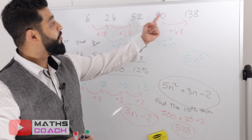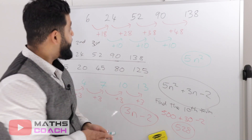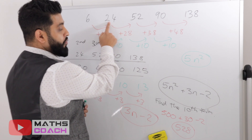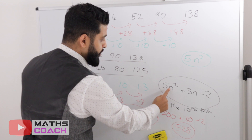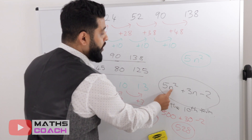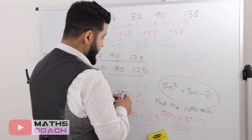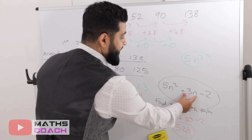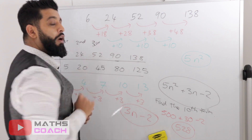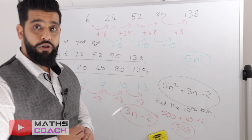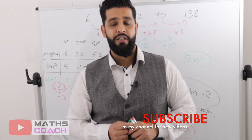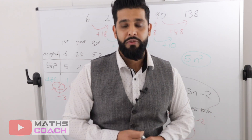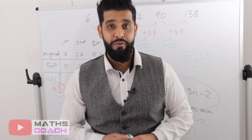Don't forget to check by testing the rule against your original sequence. For the second term, n equals 2: 2 squared is 4, times 5 is 20, plus 3 times 2 is 6, giving 26, minus 2 is 24. That proves the nth term of the quadratic sequence is correct. Thank you for watching — if you liked the video please give it a thumbs up and subscribe.